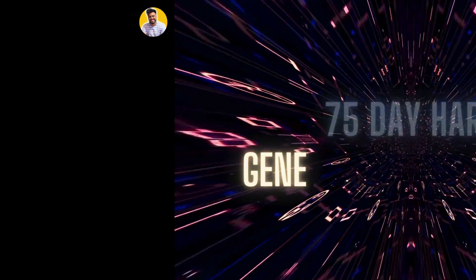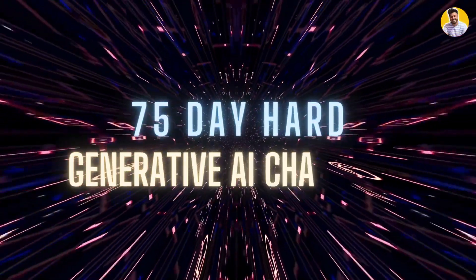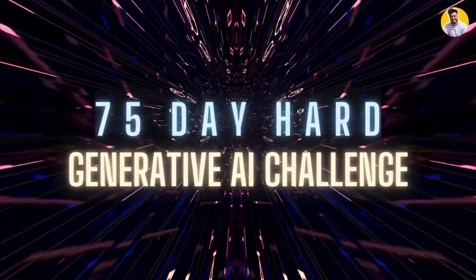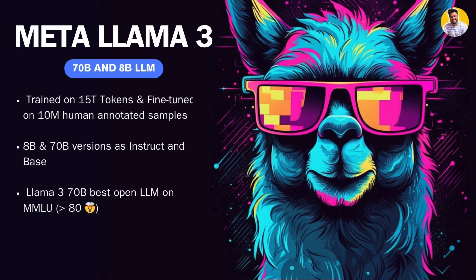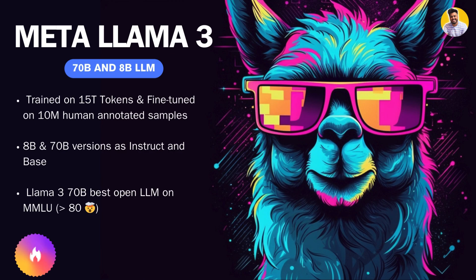Hello guys and welcome to FreeBirdsView and welcome to 75 Day Hard generated by learning channel — this is day 68. Meta just released the LLAMA 3 large language model, which is an amazing LLM. It is trained on 15 trillion tokens and fine-tuned on 10 million human-annotated samples. It comes in two variants: an 8 billion parameter model and a 70 billion parameter model.